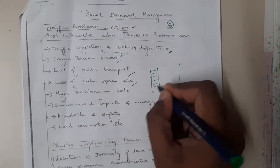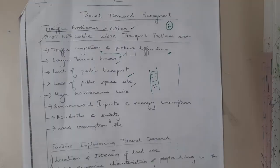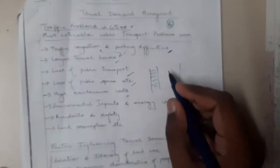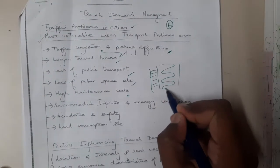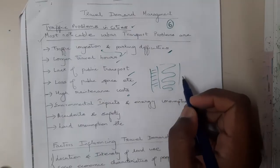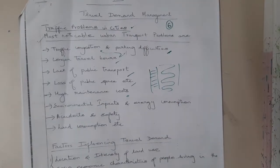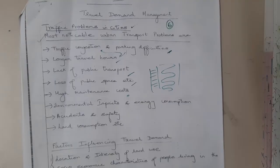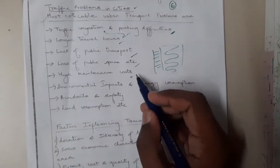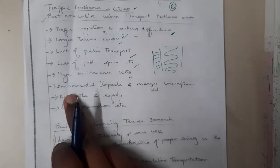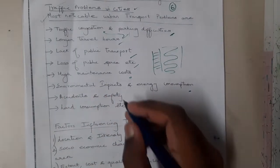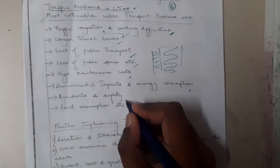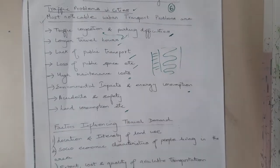Due to parking, vehicles occupy part of the road, causing loss of that space. Similarly, there is a high maintenance cost — if something bad happens to a particular road, the maintenance cost for that part will be very high. Additionally, there is environmental impact, energy consumption, and land consumption among various other problems.